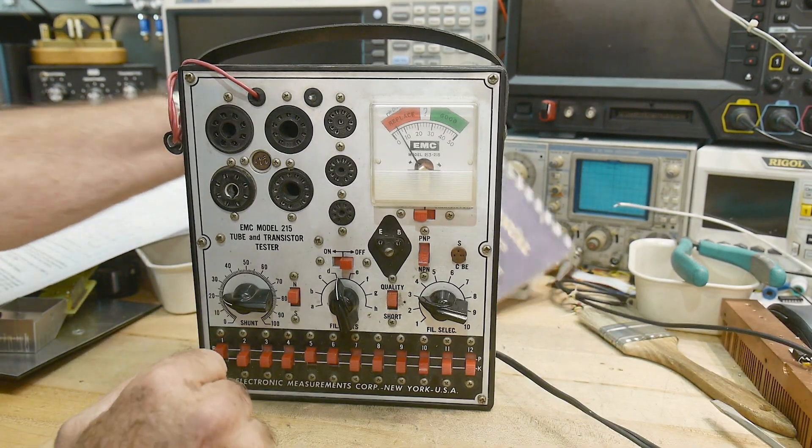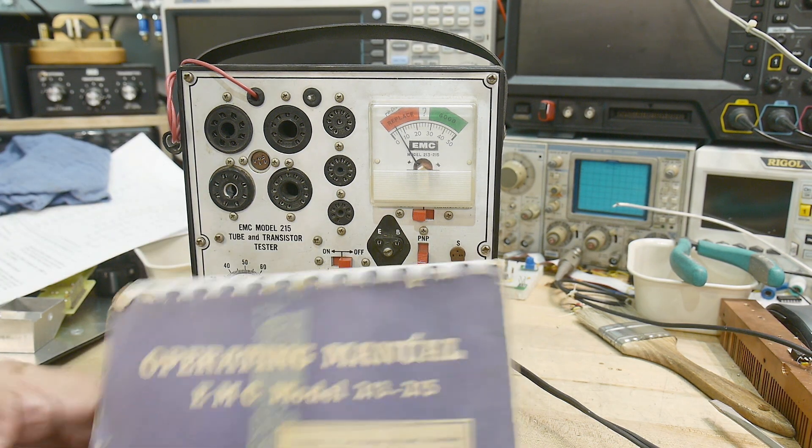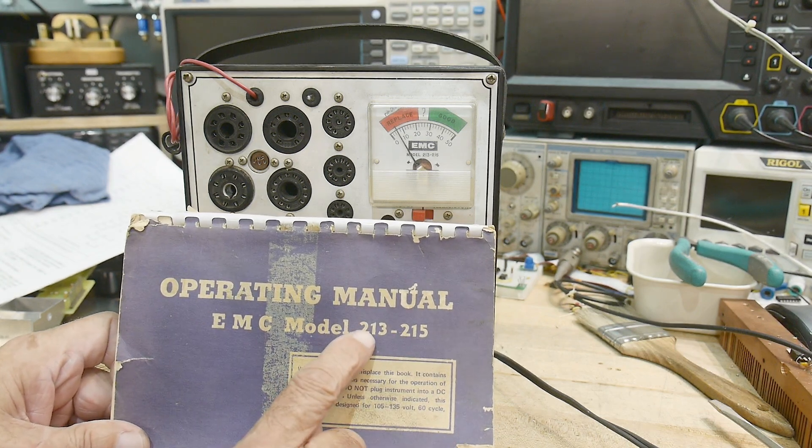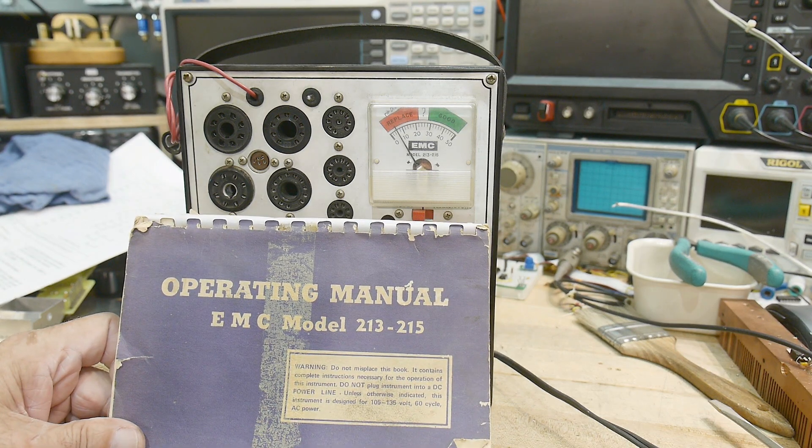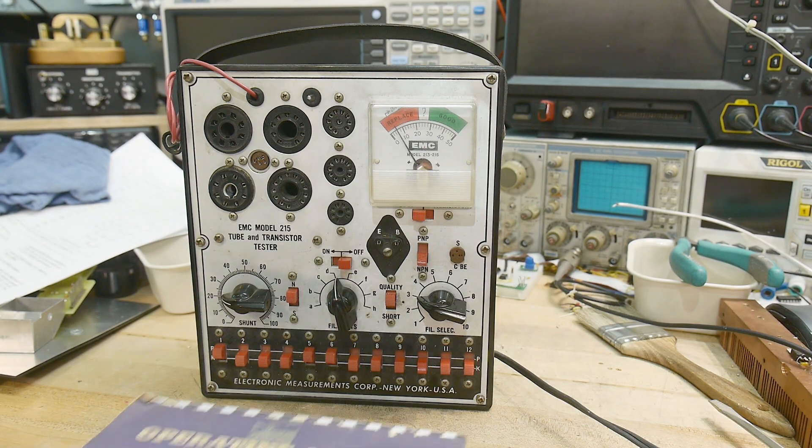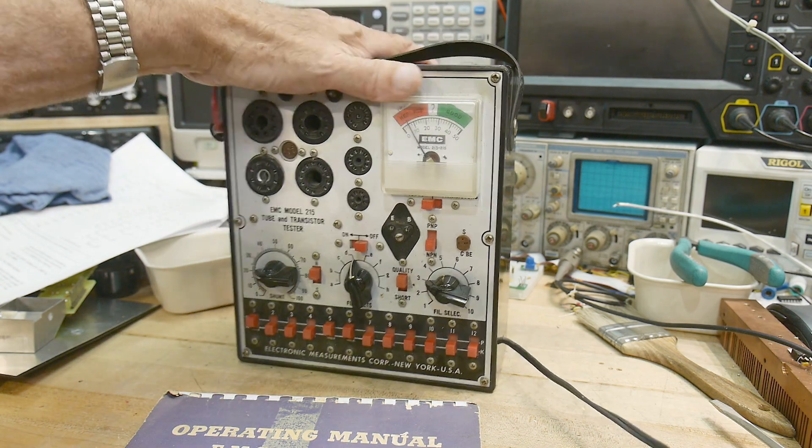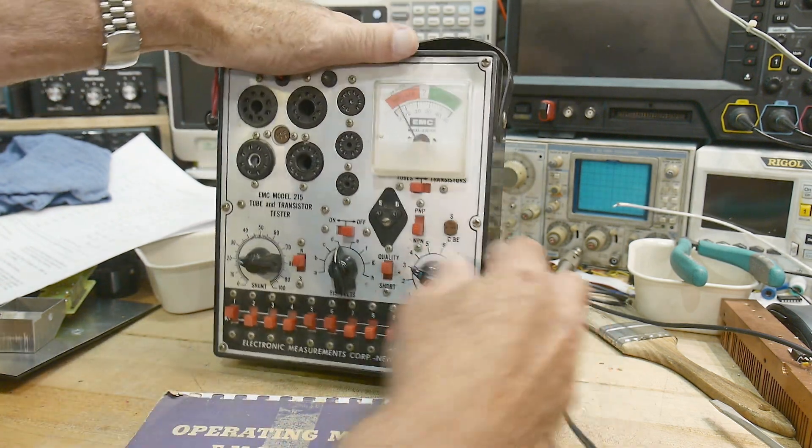So this is the other tube tester that I've been using for quite a while. It is an EMC model 213, 215, Electronic Measurements Corporation. Don't know who they are in New York. So yeah, so this is what I had.